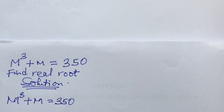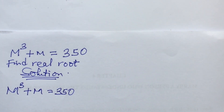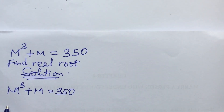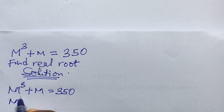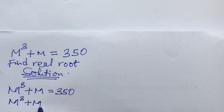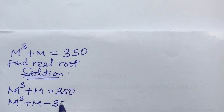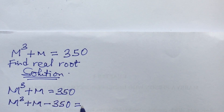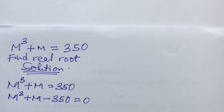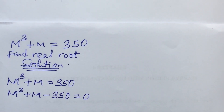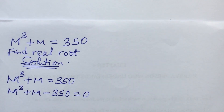First, we move the constant to the left-hand side of the equation. This gives us m to the power of 3 plus m minus 350 equal to zero.